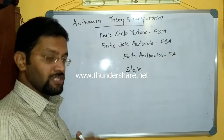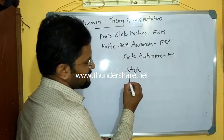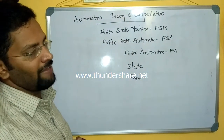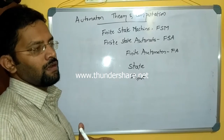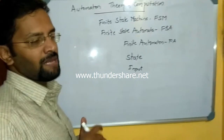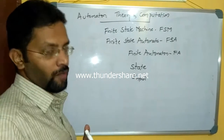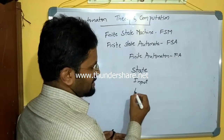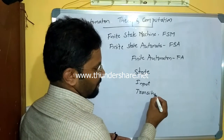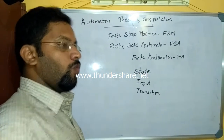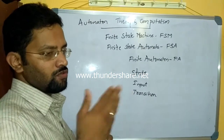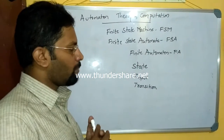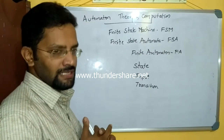State may change during time. How can I change the state? When I want to change the state, there is something required called input. For example, if I want to change the state of a car from rest to motion, I may have to give input as a key or start it — some external input is provided. So automata should have state as well as input. The process of changing state from one to another is called a transition.